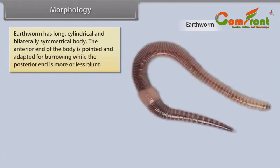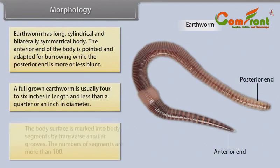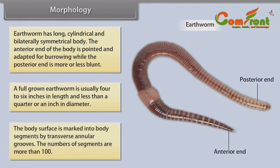Morphology: Earthworm has a long, cylindrical and bilaterally symmetrical body. The anterior end is pointed and adapted for burrowing, while the posterior end is more or less blunt. A full-grown earthworm is usually 4–6 inches in length and less than a quarter of an inch in diameter. The body surface is marked into segments by transverse annular grooves, with more than 100 segments.